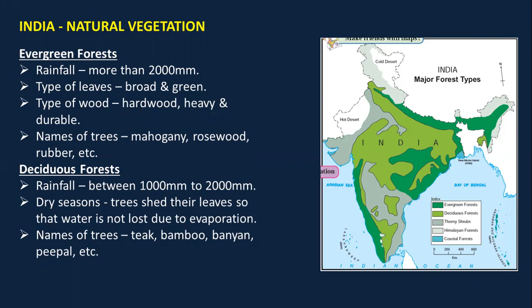Starting with the first type — evergreen forest — which receives more than 2000 mm of rainfall. The type of leaves found here are broad and green. The type of wood is hard, heavy, and durable. The names of trees present here are mahogany, rosewood, rubber, etc.